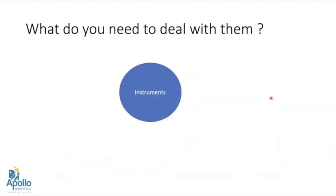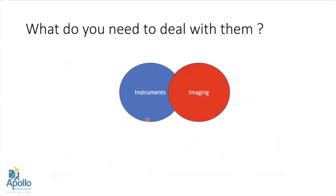What do you actually need to deal with complex tumors? You need instruments — definitely, if talking about robotic surgery, we need robotic instruments. Imaging definitely plays a very important role, and a good 3D reconstruction of both the tumor and the vessels plays a very important role. Experience of the surgeon, without any doubt, is one of the most important factors to do any form of surgery.